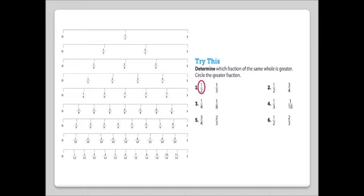Number 2: 1 half or 3 fourths — circle the greater fraction. 3 fourths is greater than 1 half. Number 3: 1 fourth or 1 eighth. 1 fourth is a greater fraction.